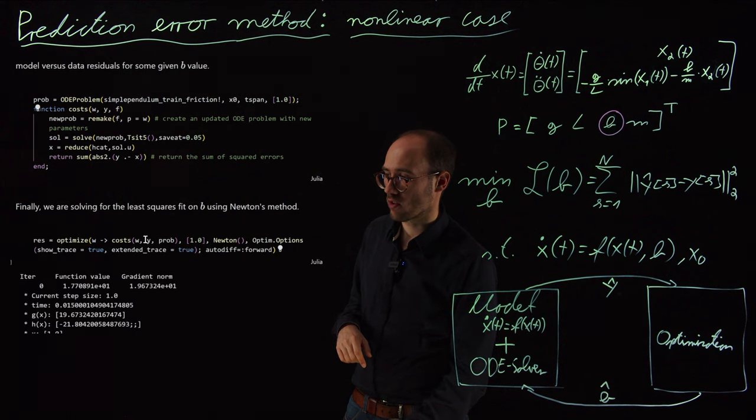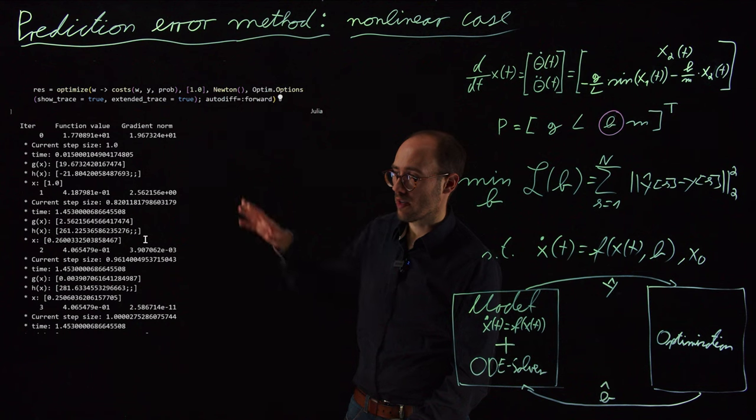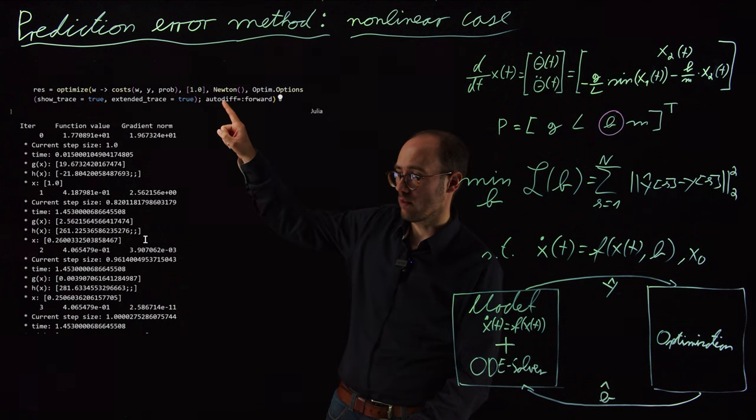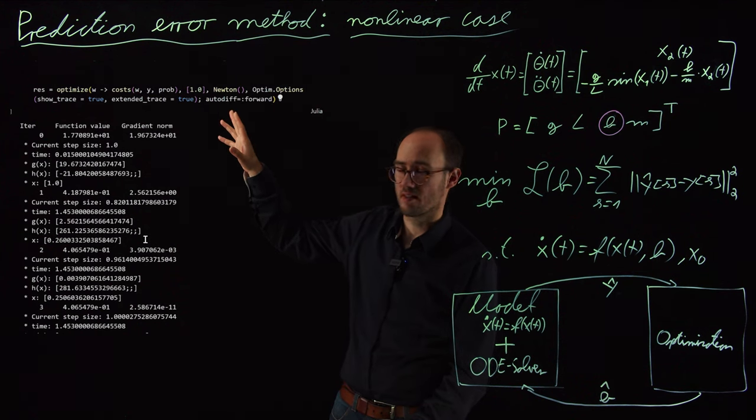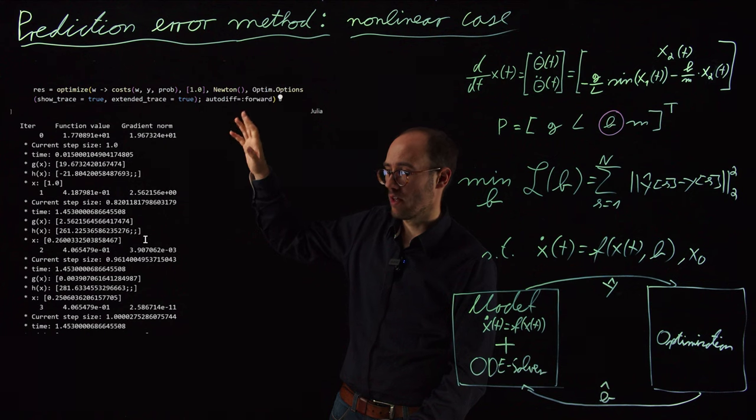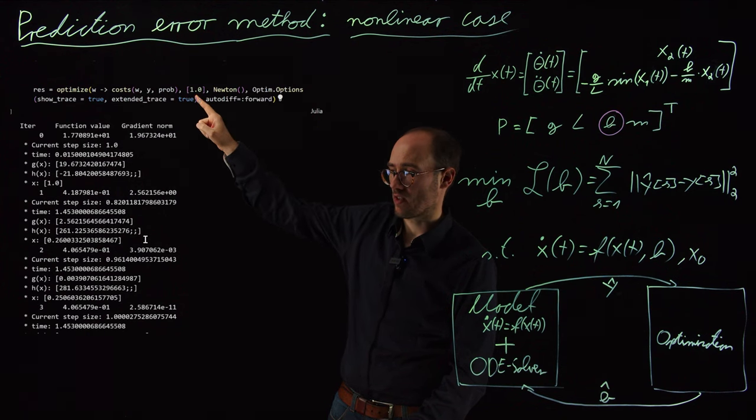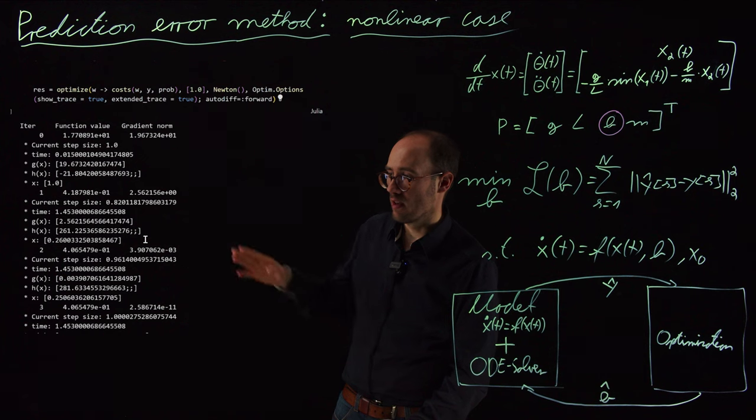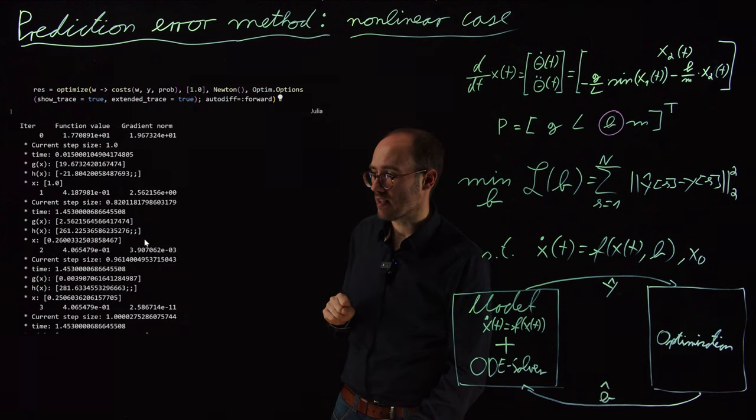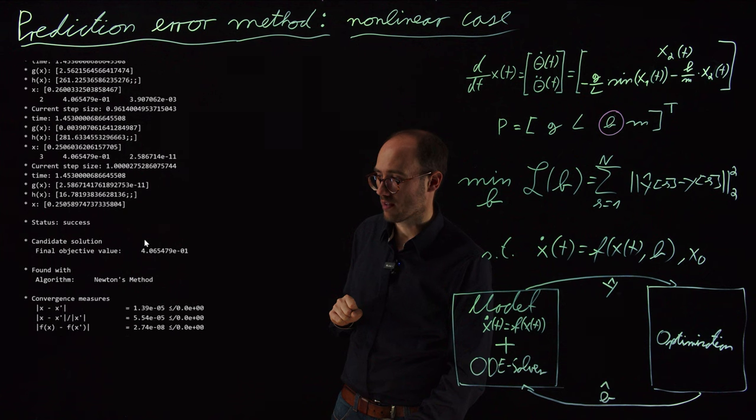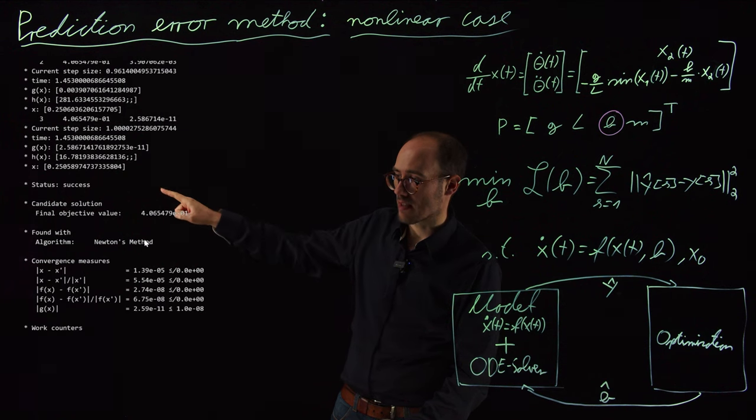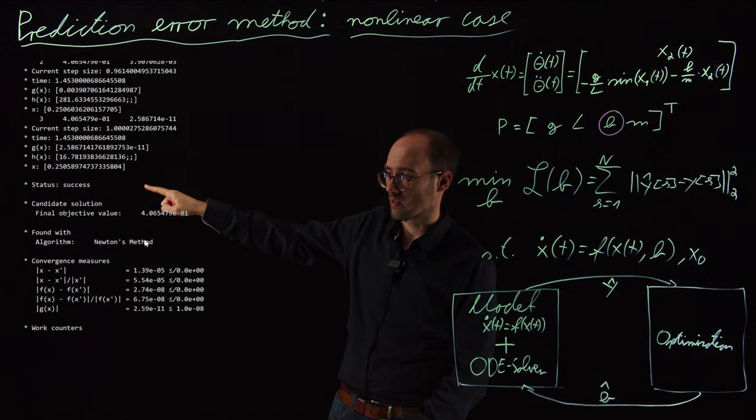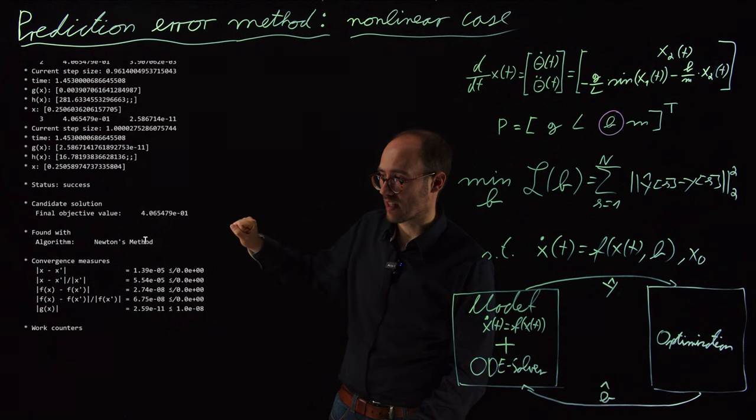This cost function is then thrown into an optimization solver. Here again, we utilize the optim.jl package. We again use the Newton solver as an arbitrary starting guess for the B value. We just use one, just as a standard guess. Here we have some extended trace output of the solver, not really important to us. What is important to us is basically here the status information. So the solver has succeeded successfully.